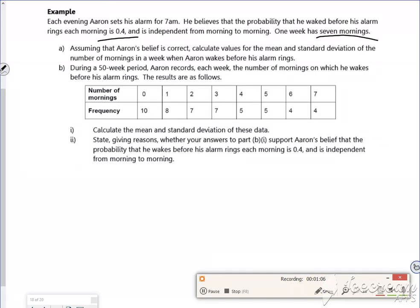Assuming Aaron's belief is correct, calculate the values of the mean and standard deviation. Part A: X follows a binomial of 7 comma 0.4, so the mean is 7 times 0.4, which is 2.8.